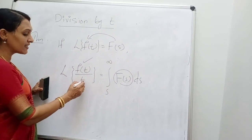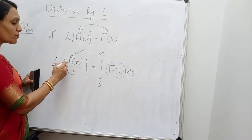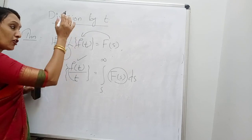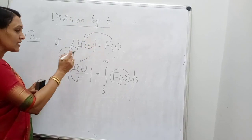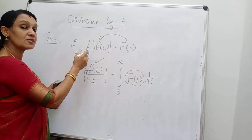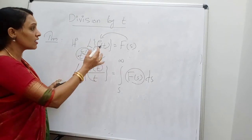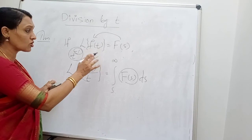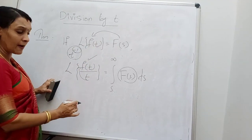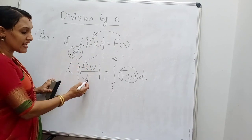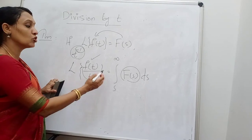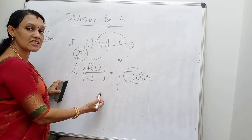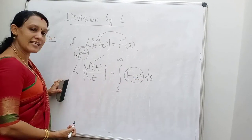You cannot write division by t as t raised to minus 1 and use the previous multiplication formula. In that case n would be minus 1, and we cannot find such a derivative. So we cannot use the multiplication formula. If f(t) is divided by t, use the division formula: integral from s to infinity of F(s) ds.